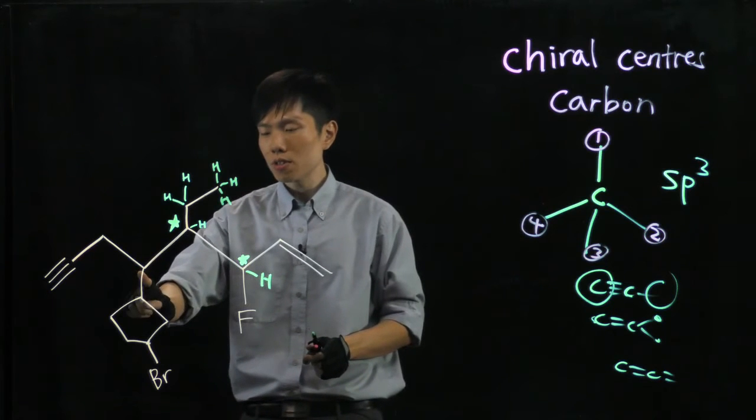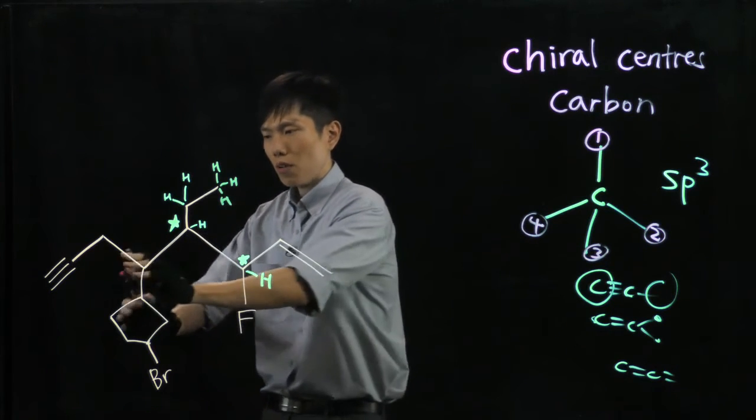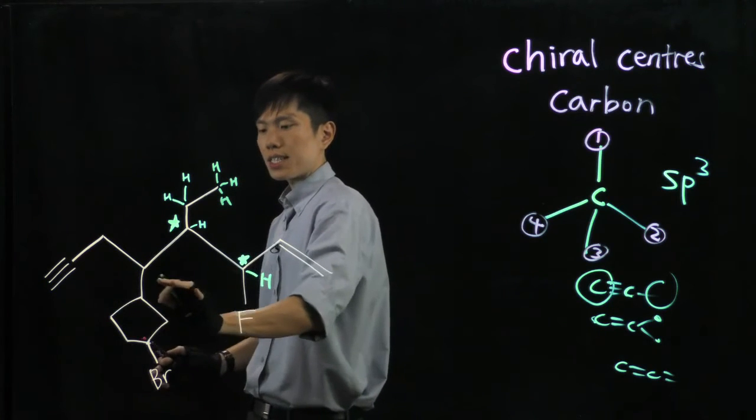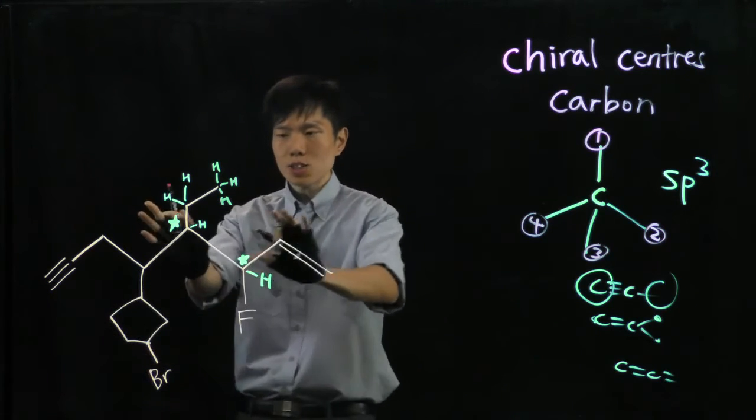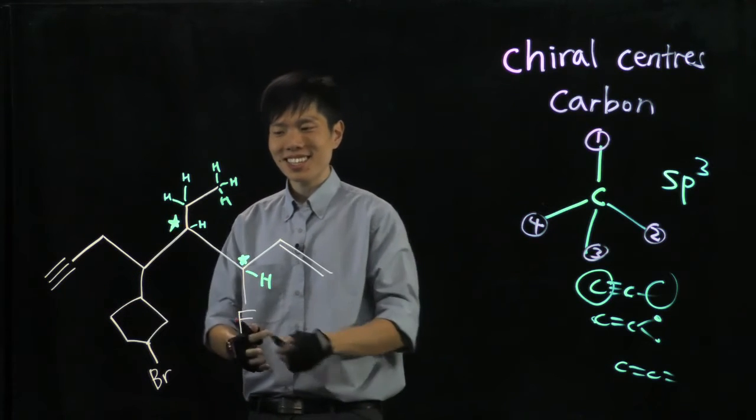Next, we go down. This carbon, we have an alkyne group, a cyclopentane group, and this big fragment, and of course, hydrogen. It's chiral.